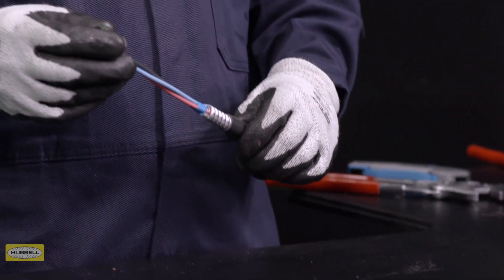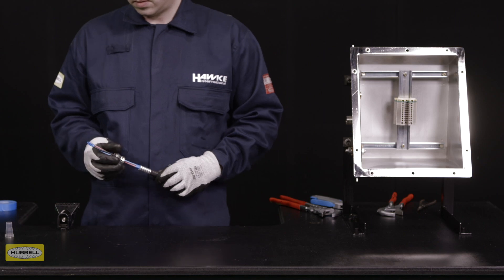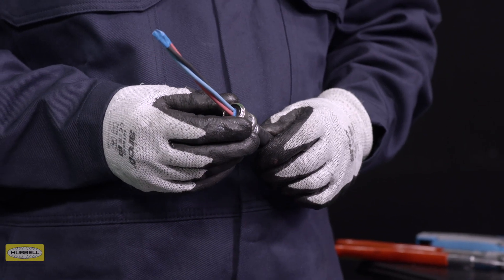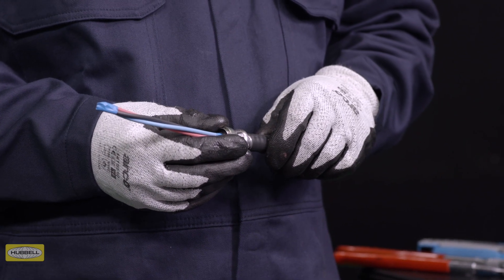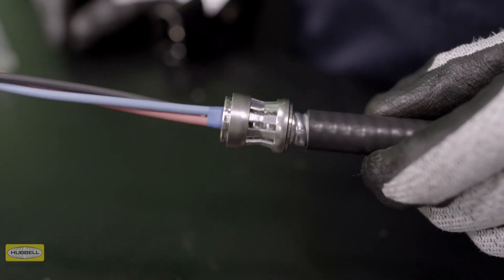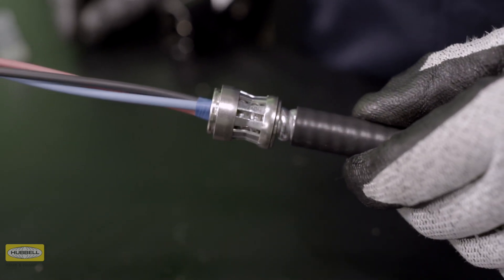Slide the Diablo onto the cable. Ensure that the Diablo is positioned over the exposed metal clad sheath, with the rear end of the Diablo at the point where the cable is stripped, as shown on screen.